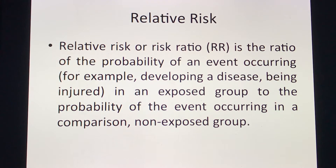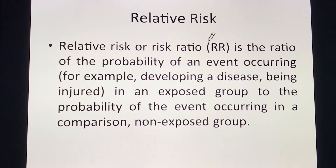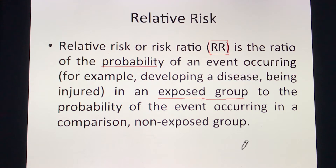The relative risk, or risk ratio (RR), is the ratio of the probability of an event occurring in an exposed group to the probability of the event occurring in a comparison non-exposed group. Please memorize this term — your RR, or relative risk — describing the ratio of the probability of an event in the exposed group to the probability in the non-exposed group.